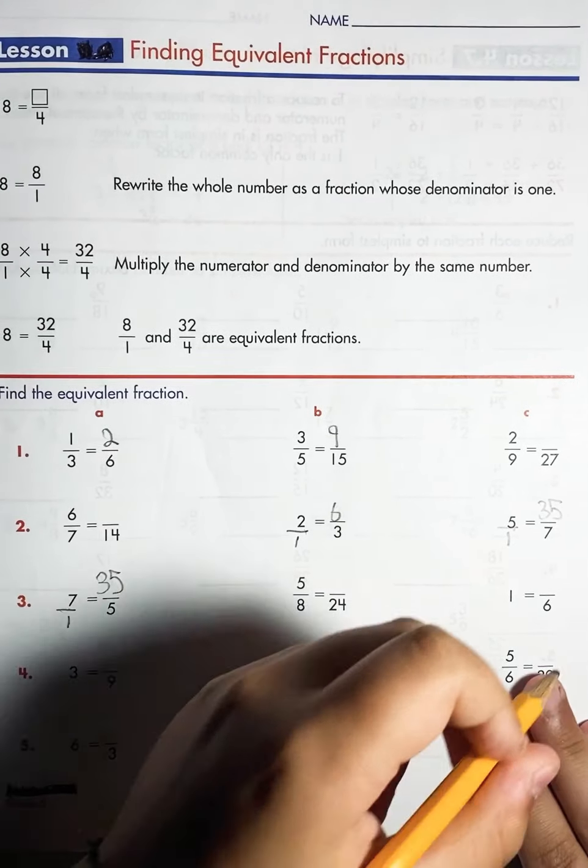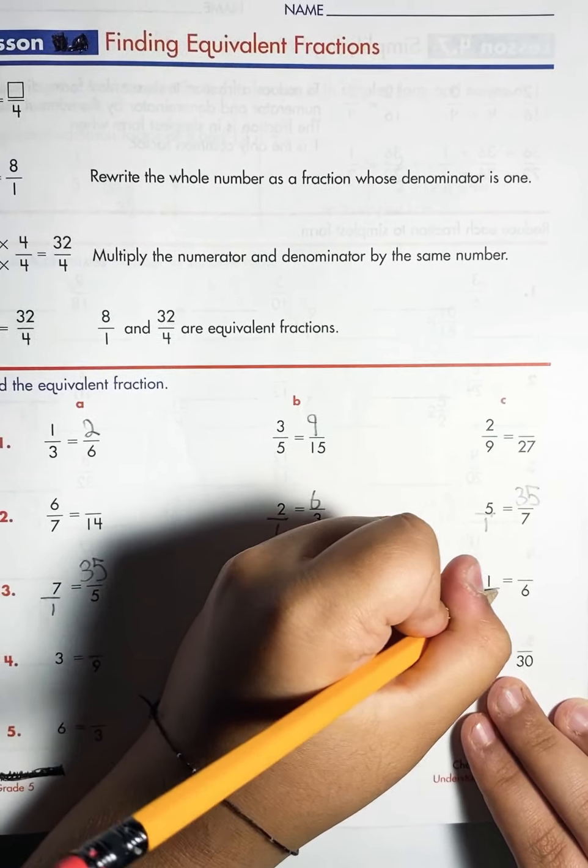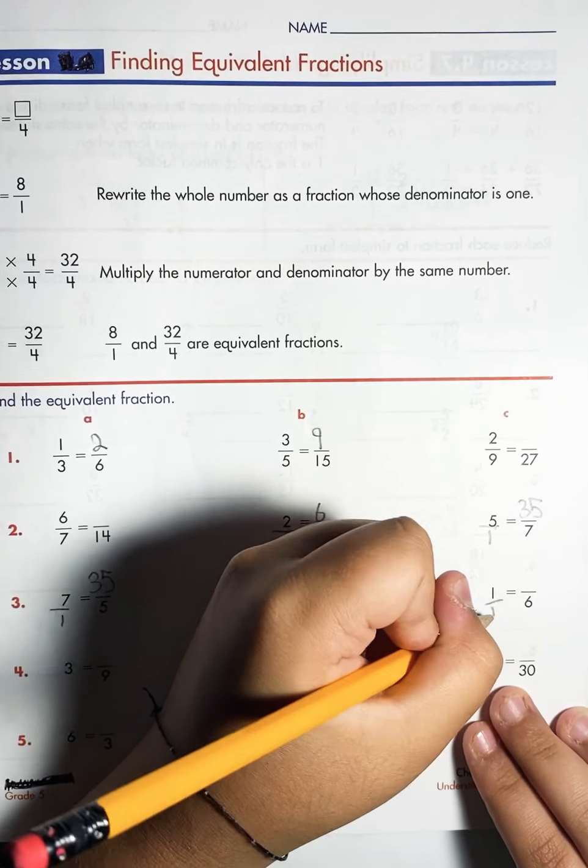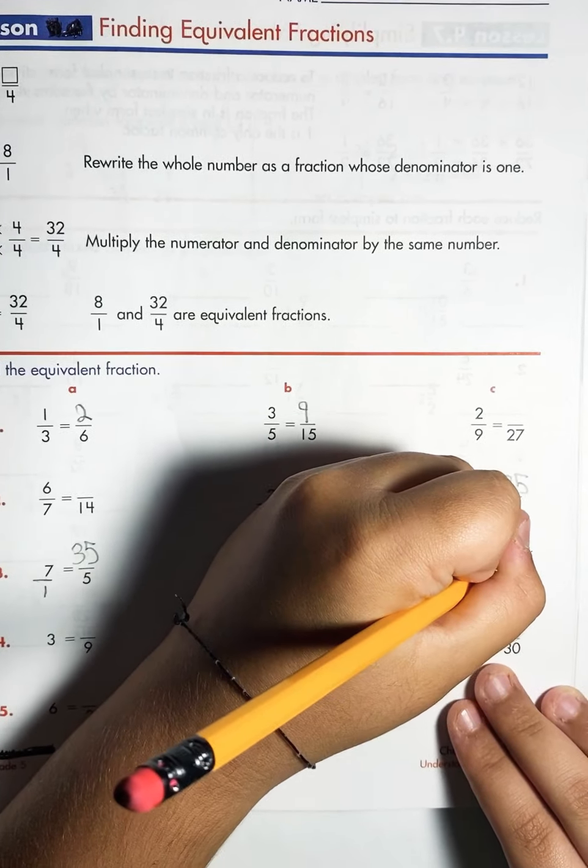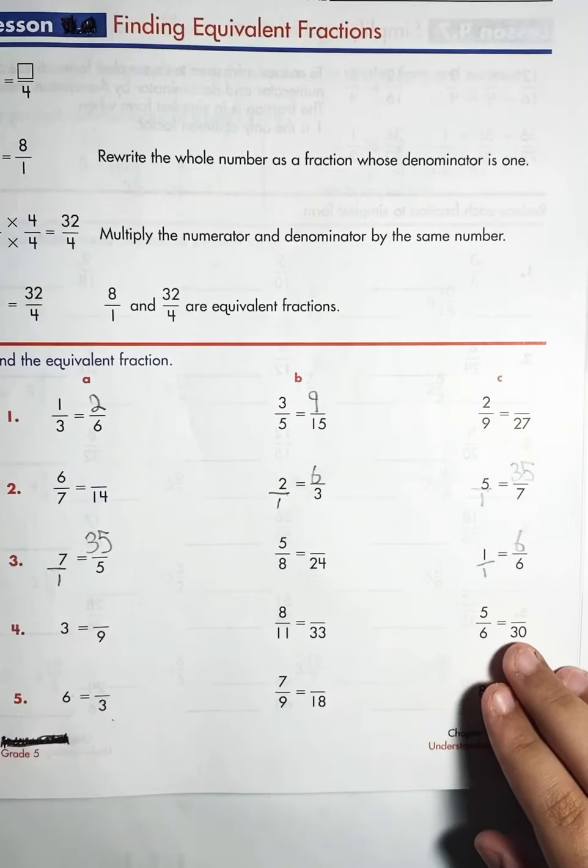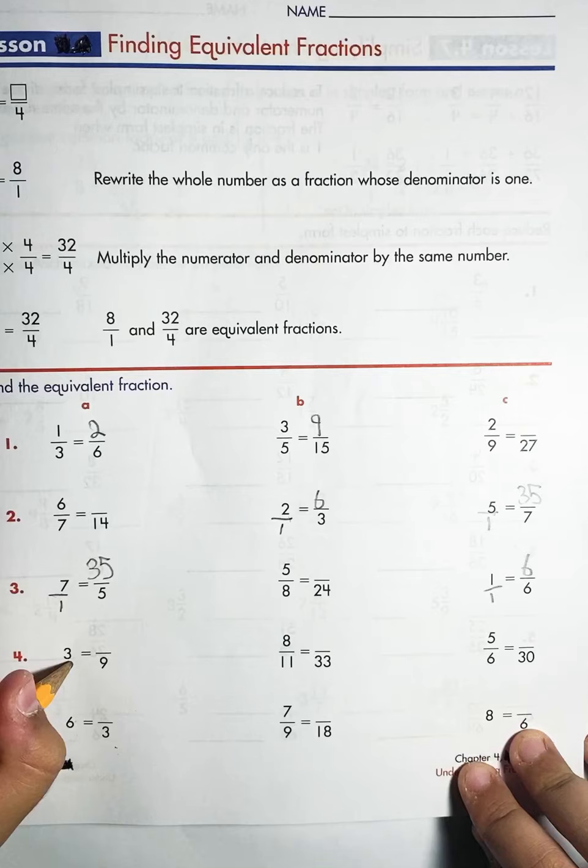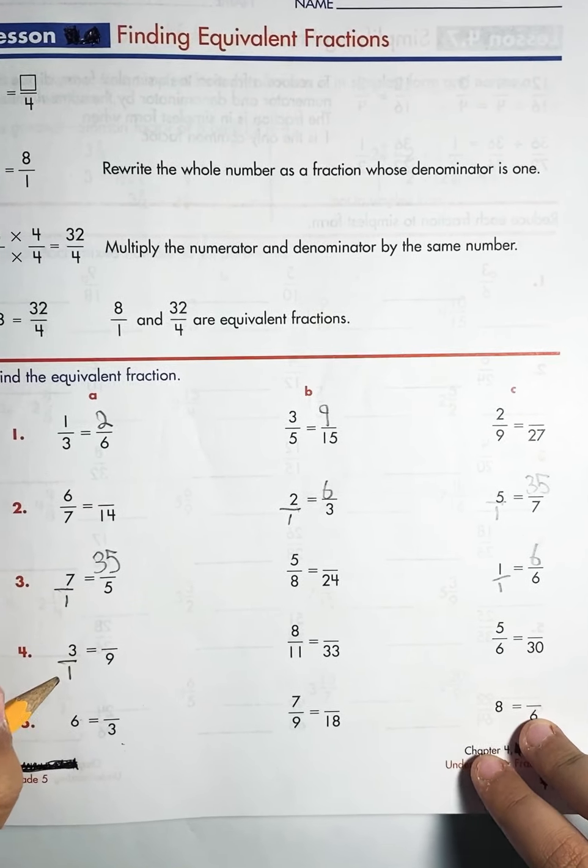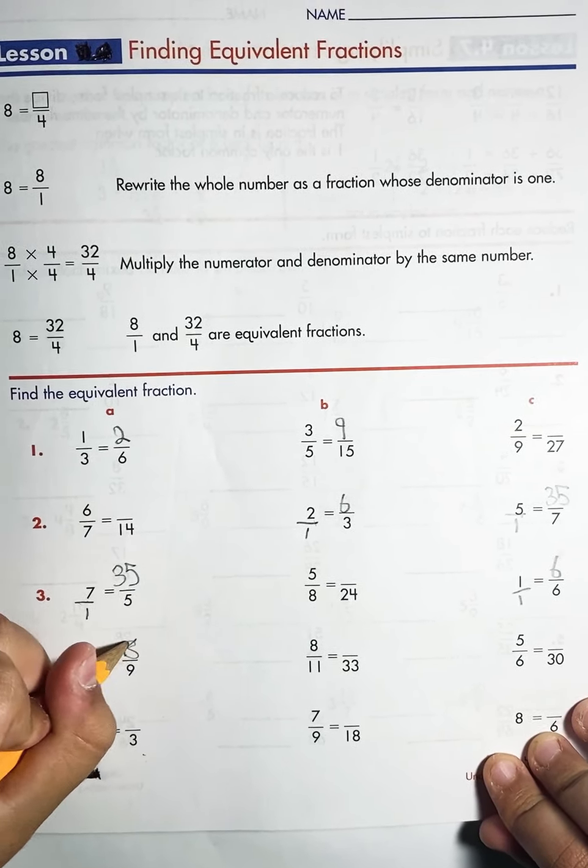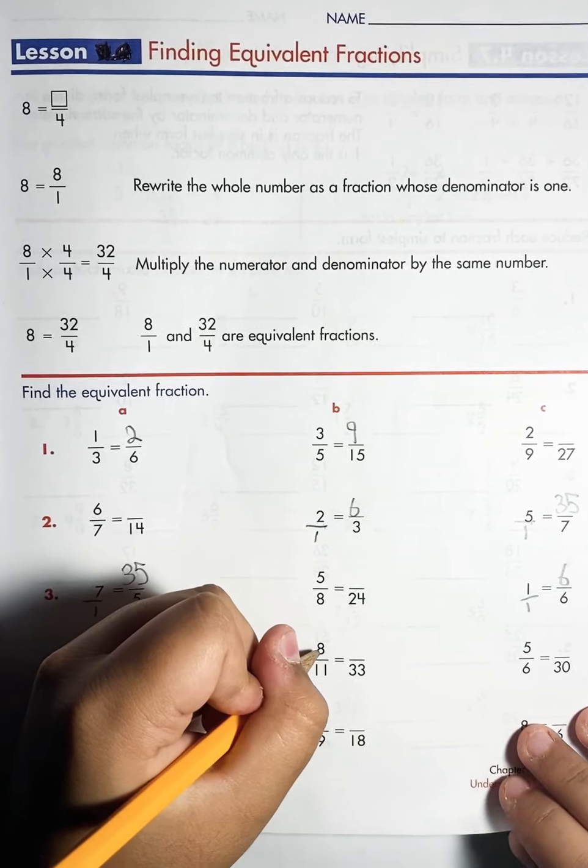Now let's do this one over here. One ones, six times. So it's gonna be six times one is six. Now let's do this one. Three ones, nine times three is eighteen.